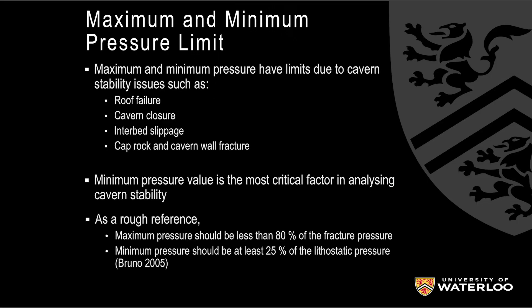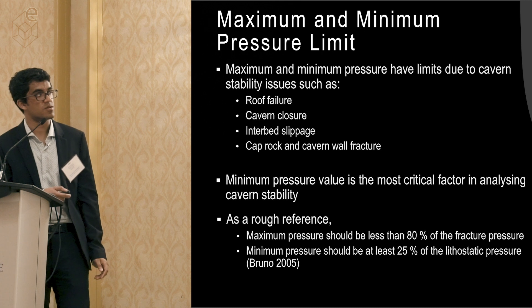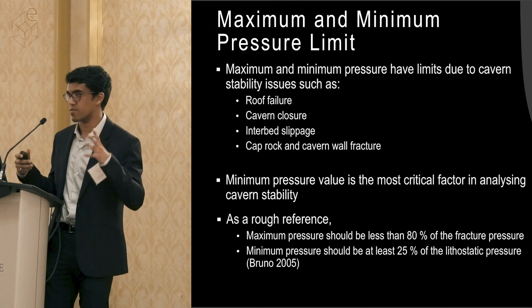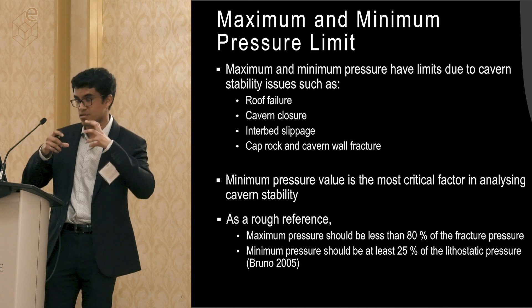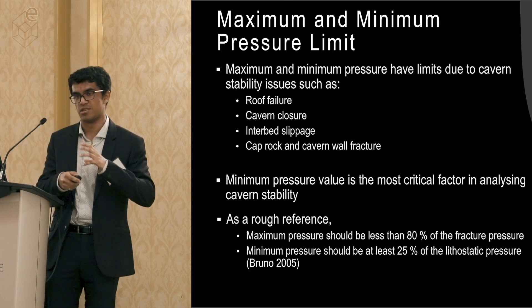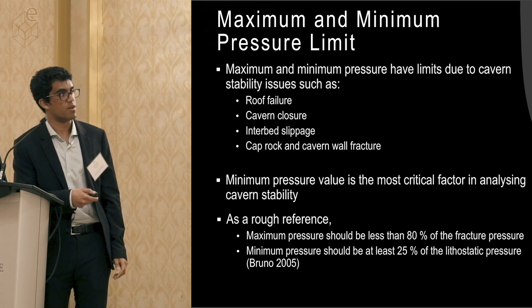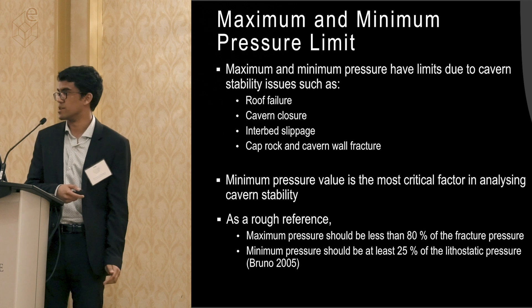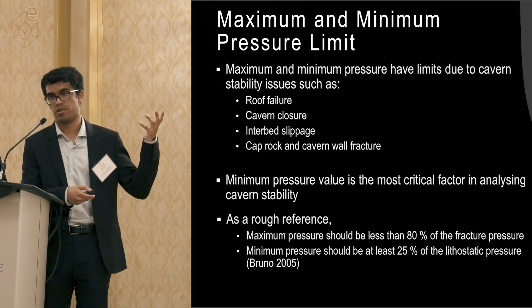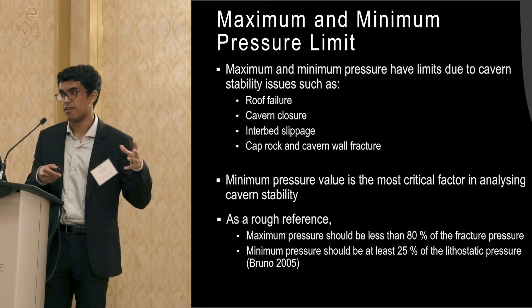We look at some geomechanical considerations: roof failure, cavern closure, bed slippage, and cap rock and cavern wall fracture — where pressures could bust the rock. It turns out minimum pressure is the most critical parameter, because in a halite rock salt medium things tend to creep in on themselves. At minimal pressure — something like zero MPa — the cavern walls slowly shrink and you completely lose your asset. We want to operate well below 80% of the fracture pressure (regulation to date is 75%), and maintain minimum pressure above 25% of the lithostatic to avoid cavern closure.